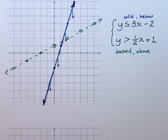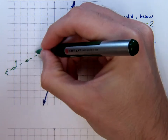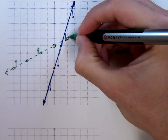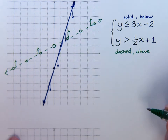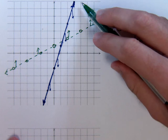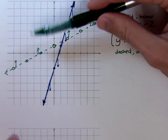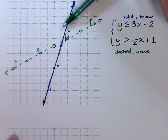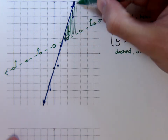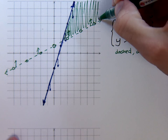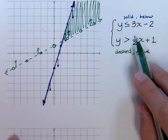For this line we're shading above, so we put arrows pointing upward. Now look at where both the green line and the blue line are shading — what's the common area? We need to shade above one line and below the other, so the region where both sets of arrows point is the intersection — the solution region where the shadings for each inequality overlap.